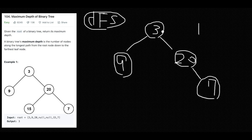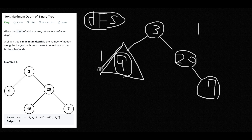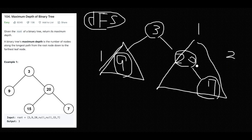Now when the root node has both a left node and a right node, we need to compare the depths of the left side and the right side. On the left side the maximum depth is 1, and on the right side the maximum depth is 2. We compare 1 with 2, so 2 is bigger. But be careful — if you return only 2, that's the wrong answer because we didn't count the root node. So we need to add plus 1.